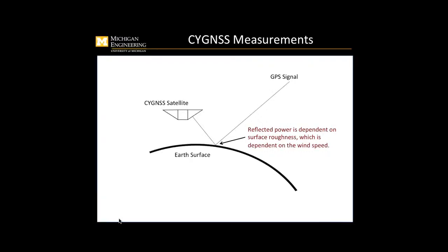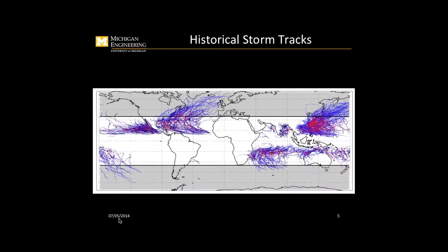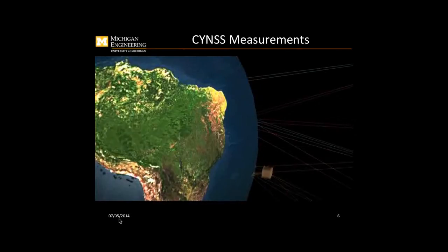If the ocean is perfectly calm, then the reflected GPS signal is very, very strong. But if the ocean is very turbulent, then the reflected signal is very weak. By measuring the reflected power, you actually get a measurement of how turbulent the ocean is. The turbulence on the ocean is directly dependent on the wind speed. So you basically can get wind speed from the reflected power of the GPS signal. What we're really interested in is measuring hurricanes or tropical cyclones and trying to figure out how tropical cyclones evolve.